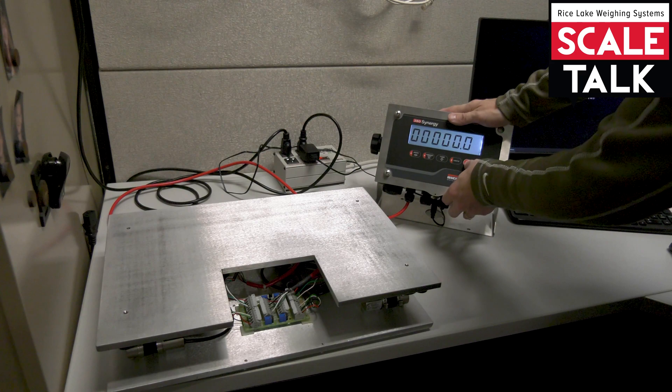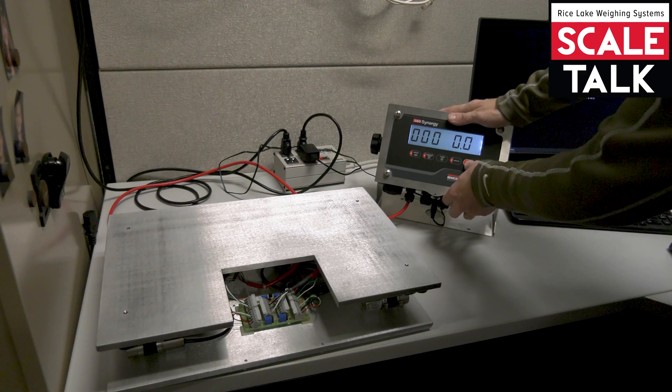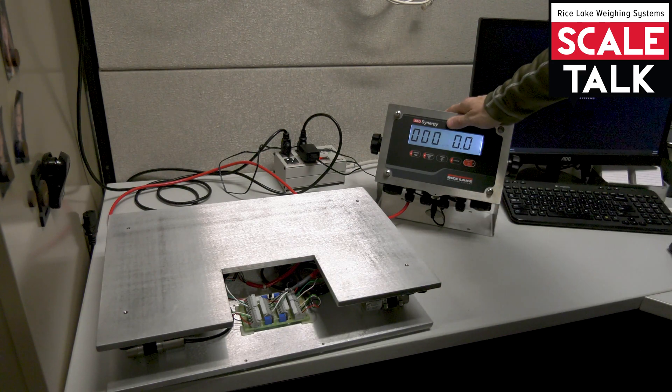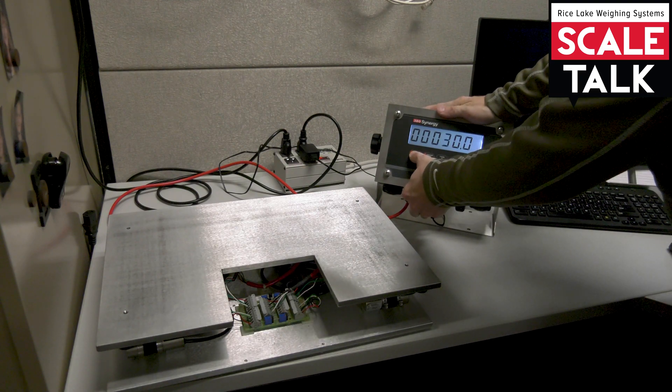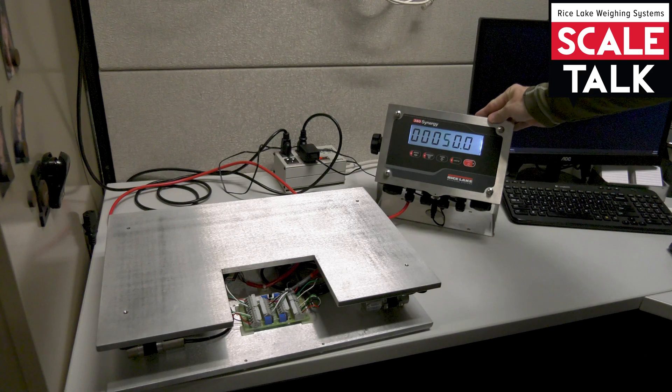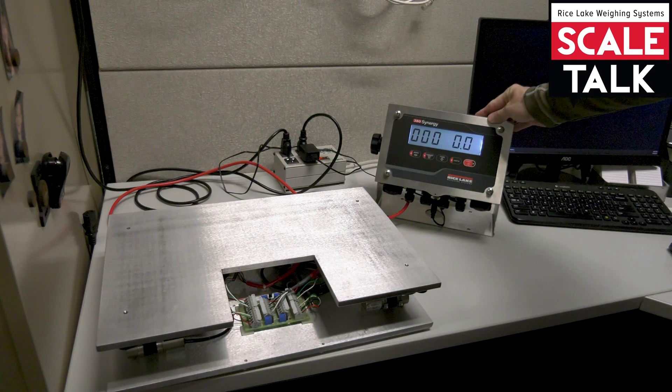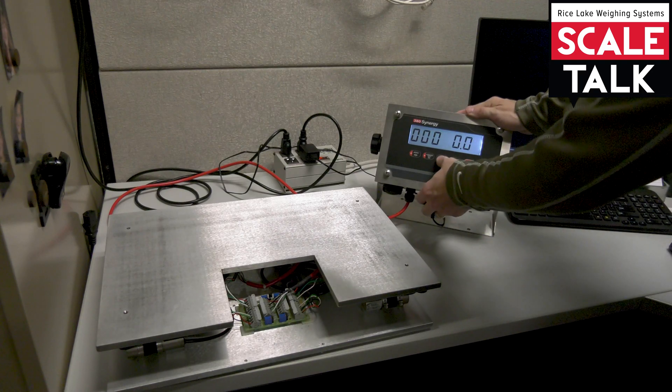Since I want a 50 pound scale, I'll press my print key until my tens place is blinking, and then I'll use my up arrow to change that to a five. Now my capacity reads 50. I'll hit tear to accept that.